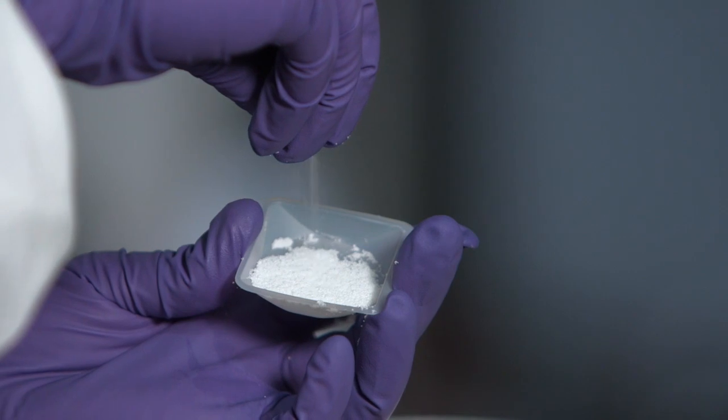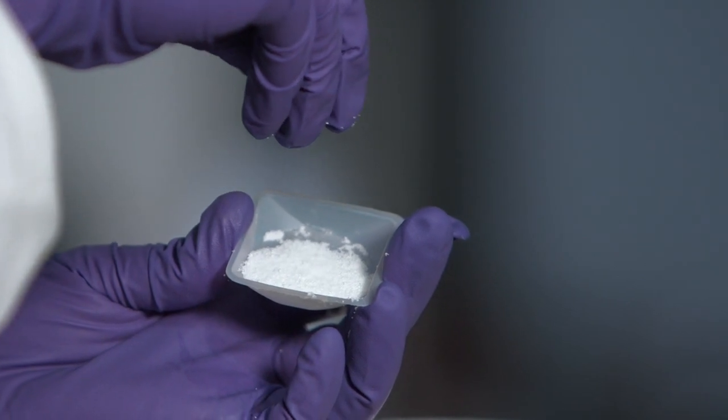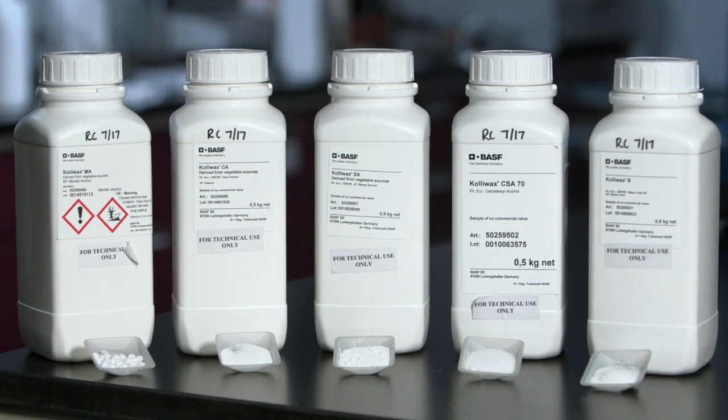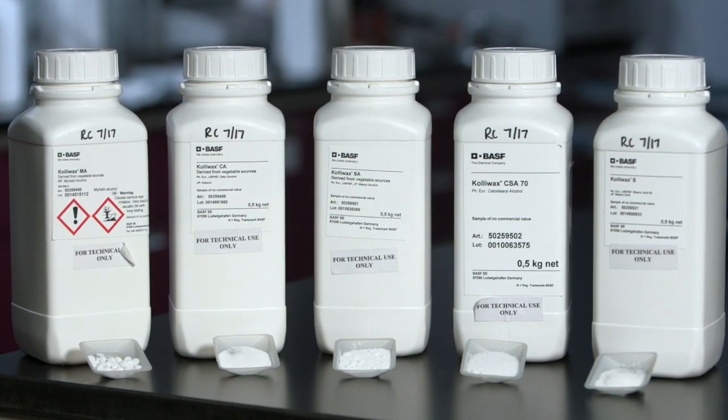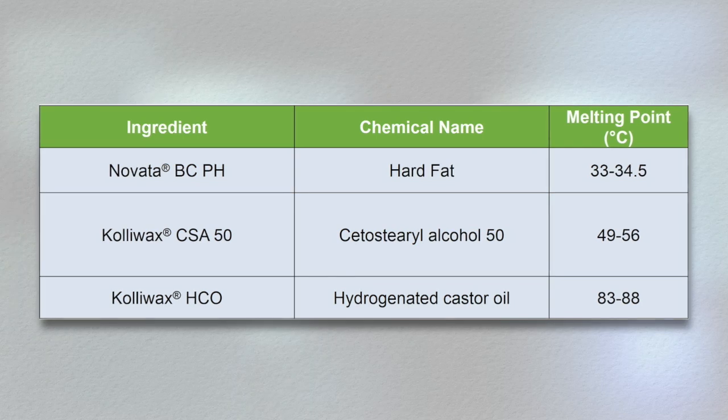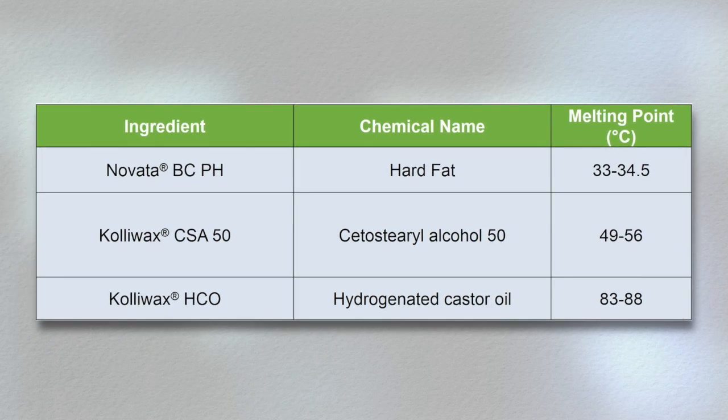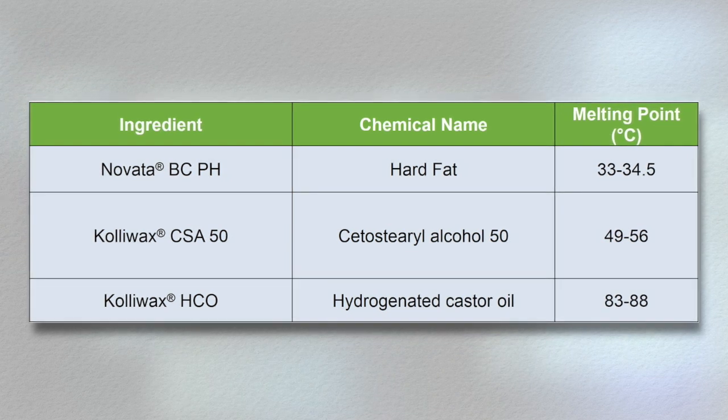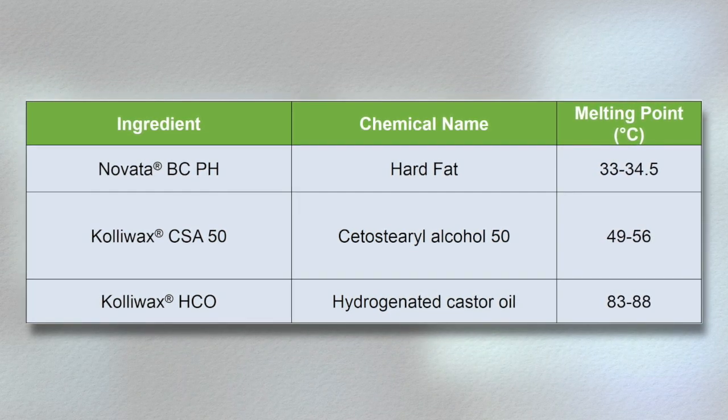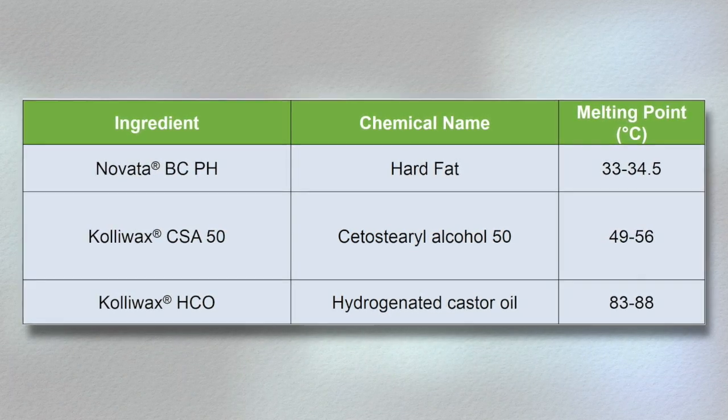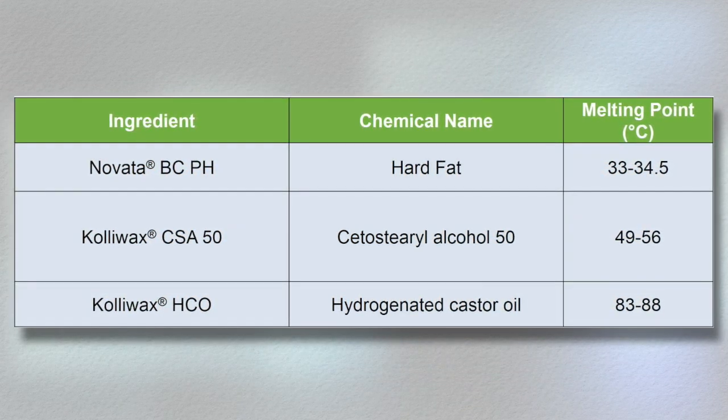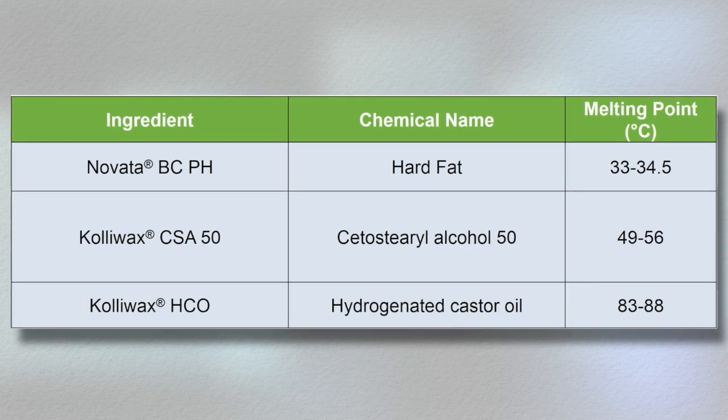When paired with mid-range melting point chemistries like fatty alcohols, including Coliwax CSA 50, the consistency of the formulation is maintained at temperatures between 49 and 56 degrees Celsius. The addition of Coliwax HCO, or hydrogenated castor oil, shifts the melting point curve to an even higher value as the melting point of Coliwax HCO is between 83 and 88 degrees Celsius.